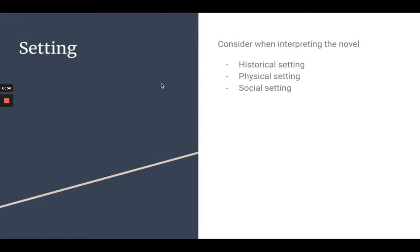When interpreting the novel, we want to consider the historical setting — when did the novel take place and when was it written. The physical setting matters too: whether it's a city, suburban, urban, or rural area affects the cultural dynamic of the characters and how they live within that space. And then there's the social setting — we talked about McCarthyism, but in the novel, consider how certain classes and people interact with each other. Setting is more than just a physical location.